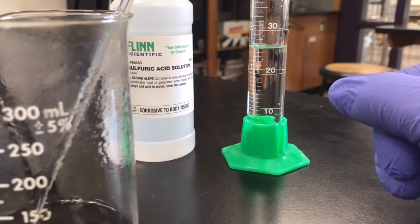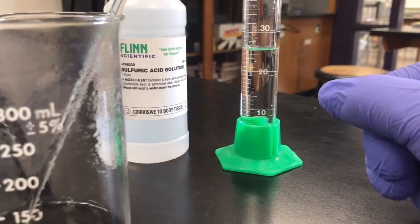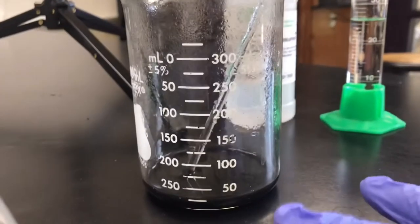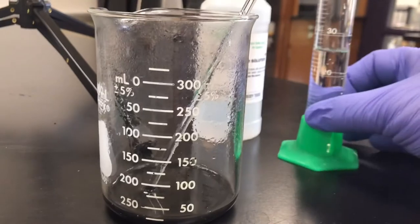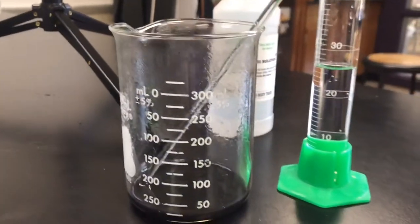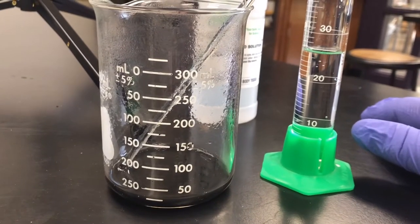We never add water to acid, but we are going to add very slowly this acid to any of the water that's in here, because the strong acid can rip apart the water molecules, creating a huge amount of heat. So that's why we're going to do this very slowly.